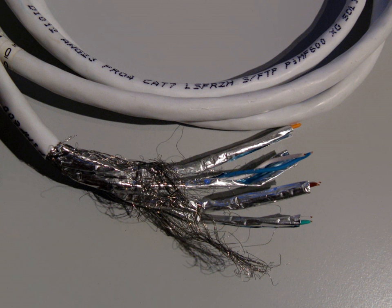Class F link channel up to 600 MHz using Category 7 cable and connectors. Class FA link channel up to 1000 MHz using Category 7A cable and connectors.